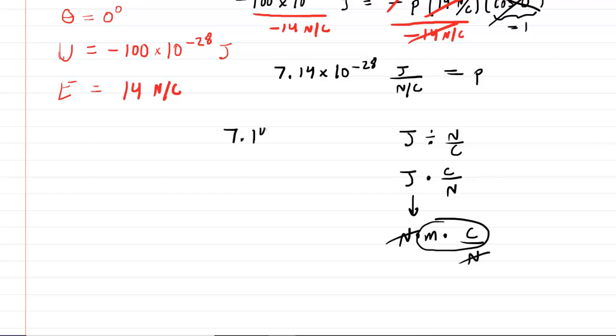So, we could express the answer as 7.14 times 10 to the negative 28th coulomb meters. That will be the magnitude of the electric dipole.